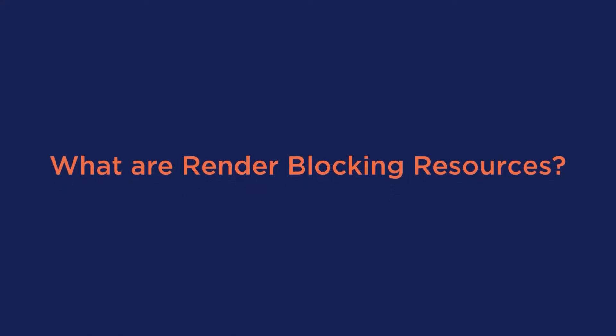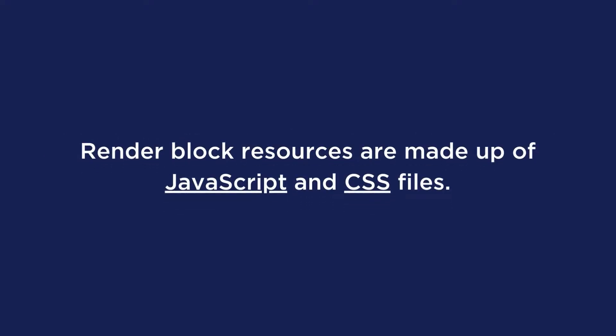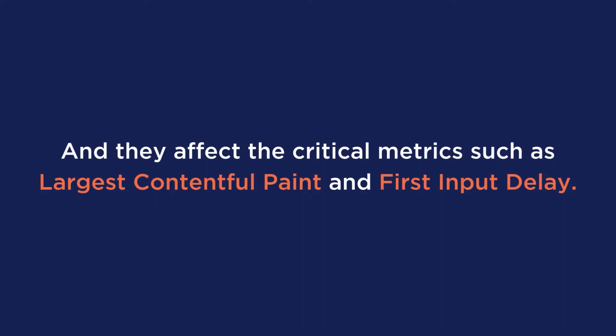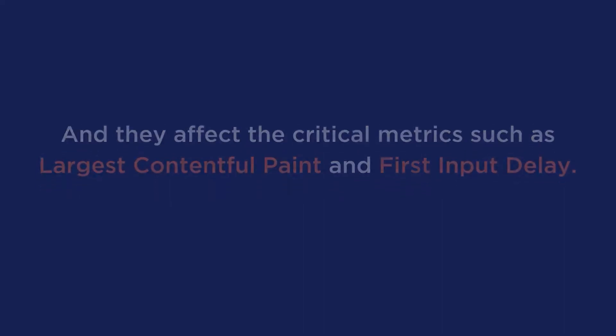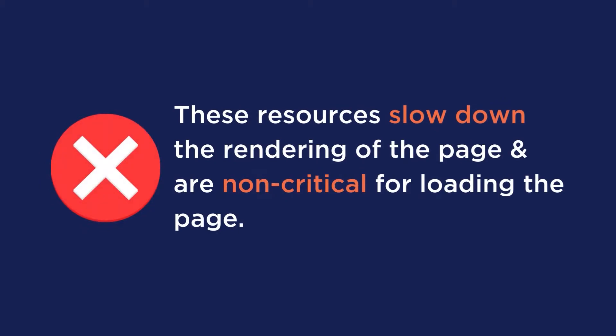First, let's understand what render blocking resources are. Render blocking resources are made up of JavaScript and CSS files, and they largely affect crucial metrics such as largest contentful paint and first input delay. They affect them because these resources slow down the rendering of the page and are non-critical for loading the page. In short, the immediate need to use the resource will determine if the resource is render blocking or not.